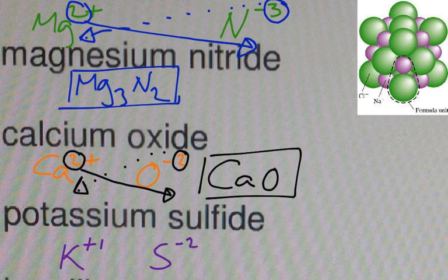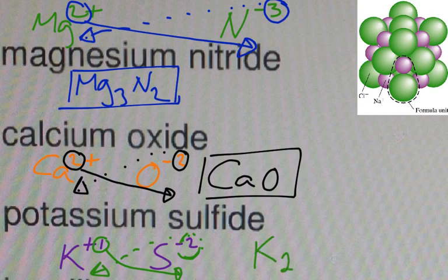All right. So what you simply do, you crisscross, the 1 goes to the S right here. This 2 goes to the K. And you wind up with K2S as your final answer.